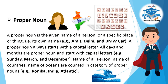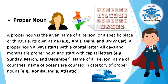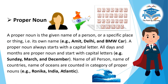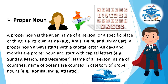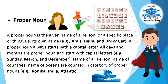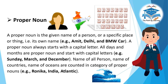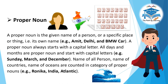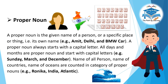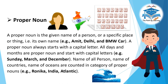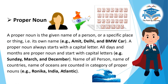Proper noun: A proper noun is the given name of a person or a specific place or thing, i.e., its own name. For example: Amit, Delhi, and BMW car. A proper noun always starts with a capital letter. All days and months are proper nouns and start with capital letters — for example, Sunday, March, and December. Names of all persons, countries, and oceans are counted in the category of proper nouns — for example, Ronica, India, Atlantic.